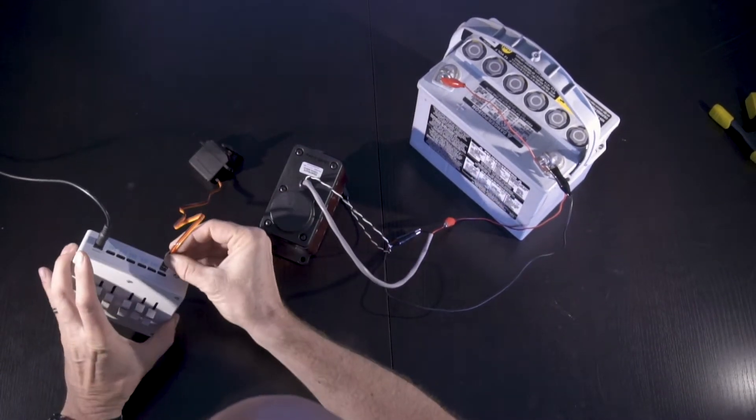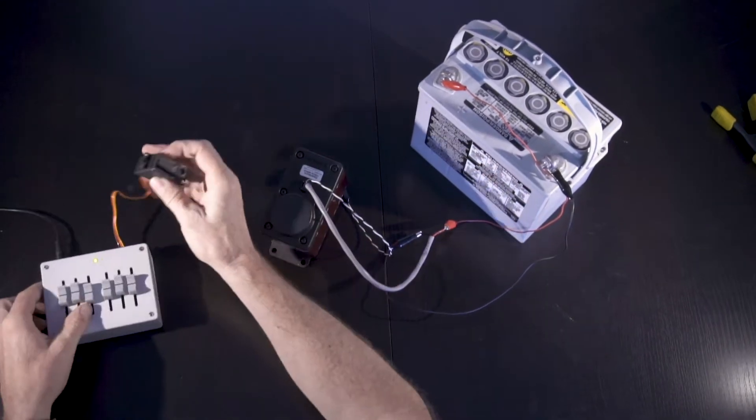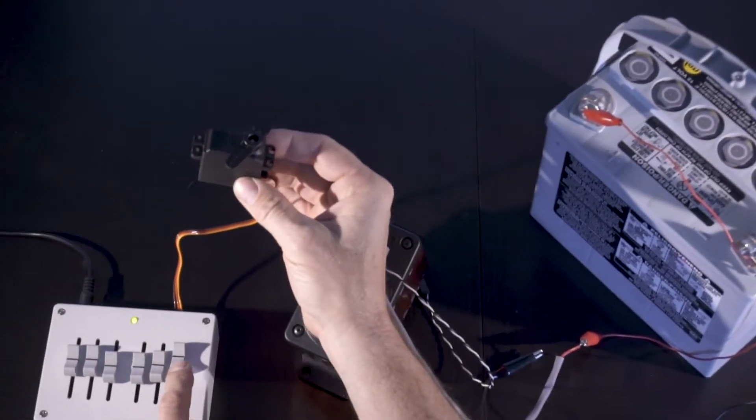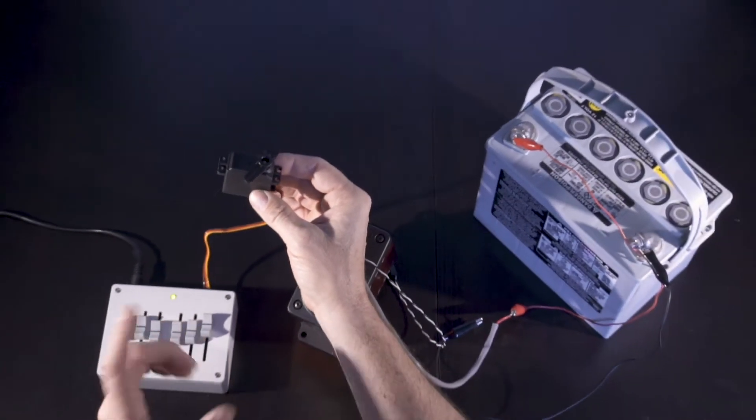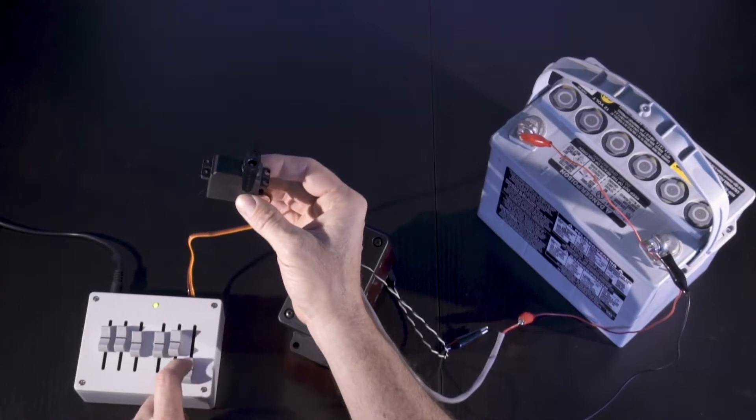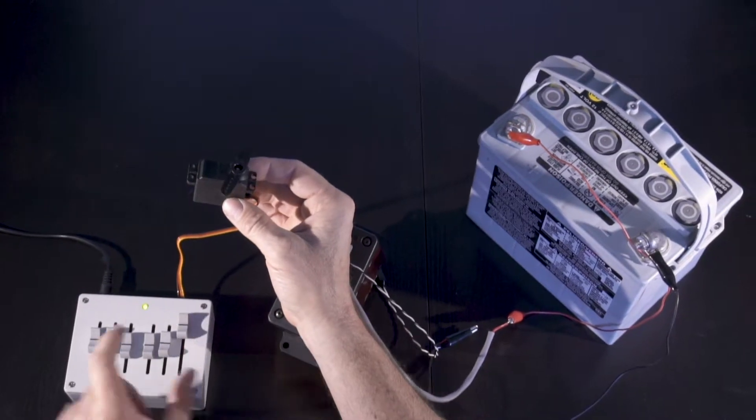And then the servo will stay in that position. I'll demonstrate with this hobby servo. And this particular box provides 180 degrees of travel. So the servo stays in the position, whereas a joystick, it would spring back to center. So it's a really nice test box.